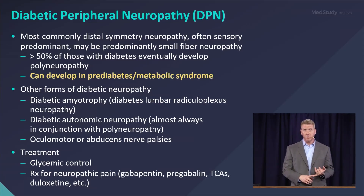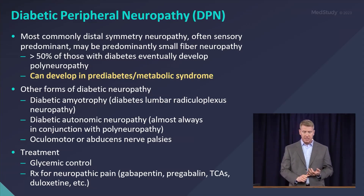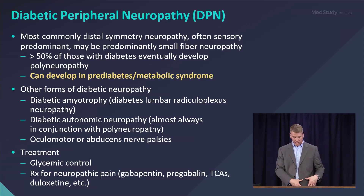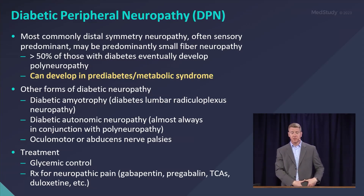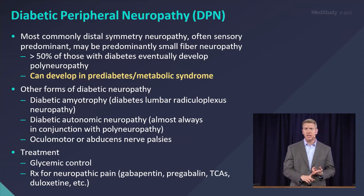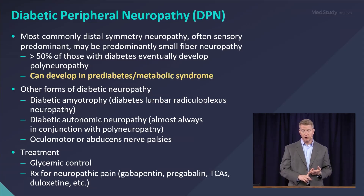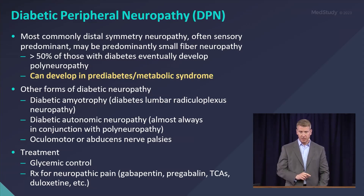One of the most classic forms is called diabetic amyotrophy. This is an acute inflammatory neuropathy involving the lumbar plexus, especially the femoral nerve distribution. Patients present with acute onset of pelvic or leg pain and develop usually quite profound motor weakness of the quadricep muscle group.